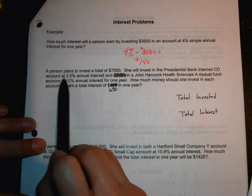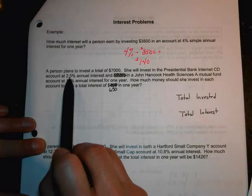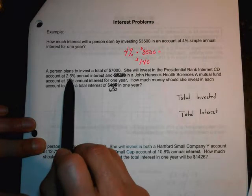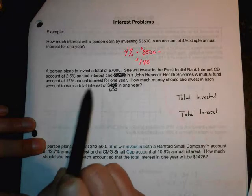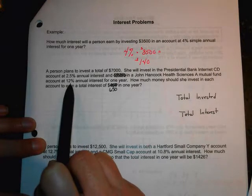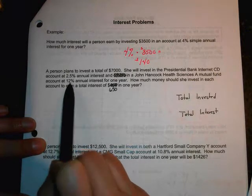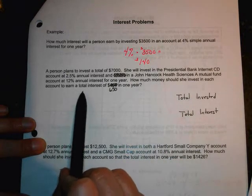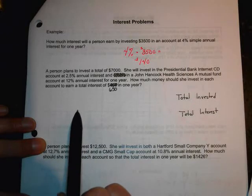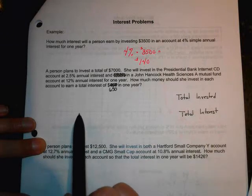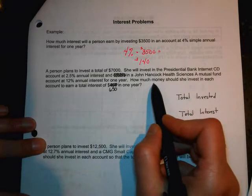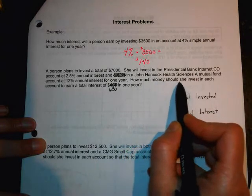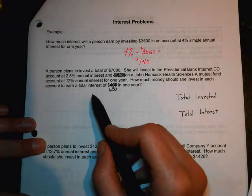The total amount she's going to invest is $7,000. She's going to put a chunk of that away in an account earning 2.5% interest. And she's going to put the rest of it at 12% annual interest. And the question says, how much should she invest in each account?